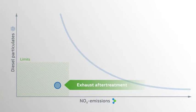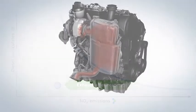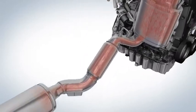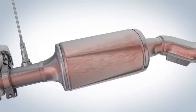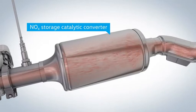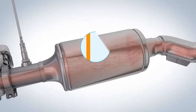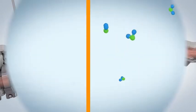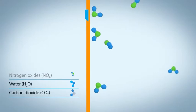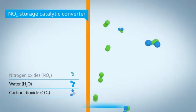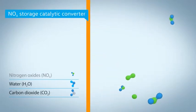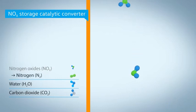Further along in the exhaust gas after-treatment, one component is the NOx storage catalytic converter, which stores the nitrogen oxides. When it is discharged, it releases CO2 and nitrogen — which makes up 78% of our natural atmosphere.